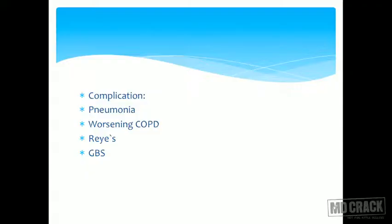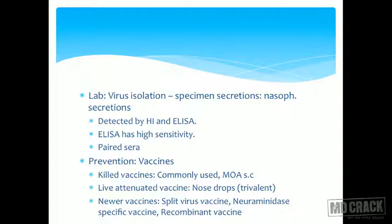An important MCQ: Streptococcus pneumoniae is the most common complicating organism causing pneumonia in influenza. So in secondary bacterial infection on influenza, the causative organism is most commonly Streptococcus pneumoniae. Other complications include worsening of pre-existing COPD, Reye's syndrome, and Guillain-Barré syndrome (GBS).